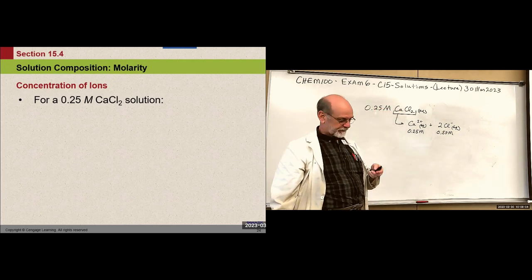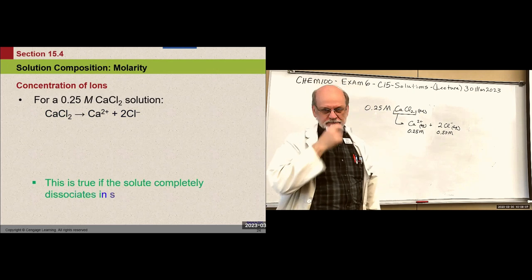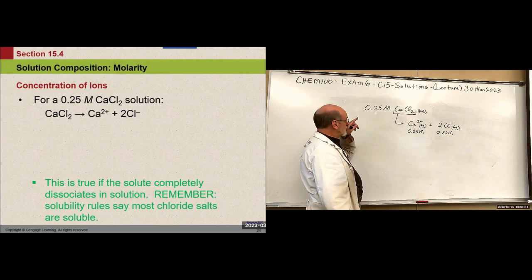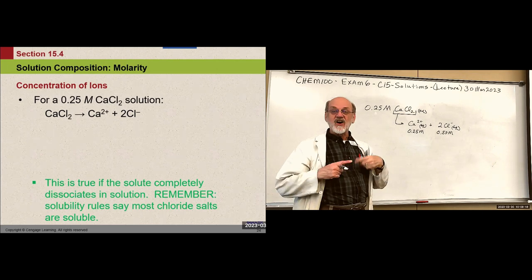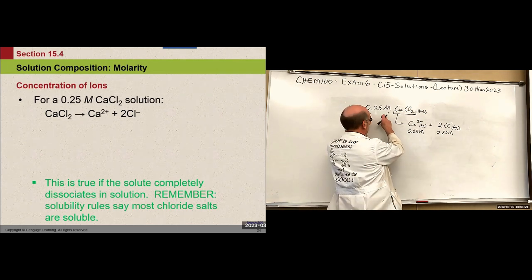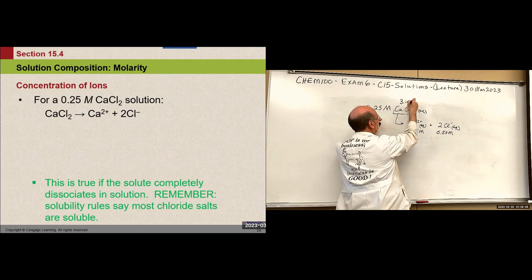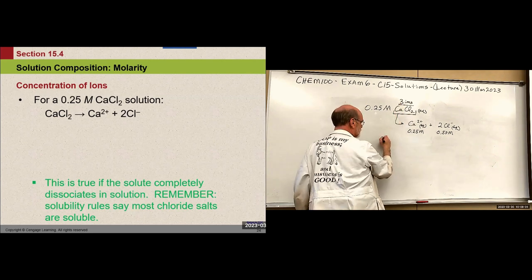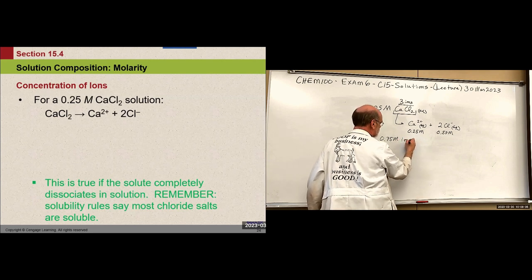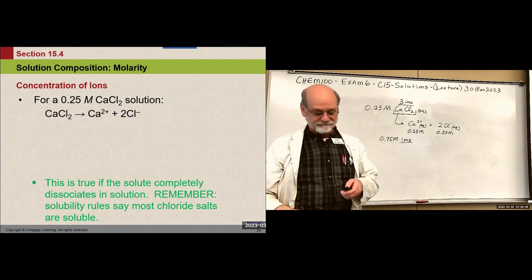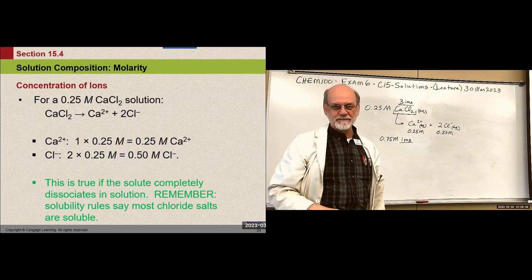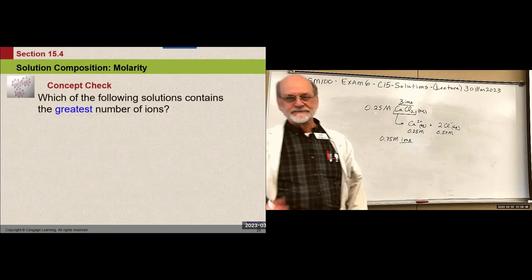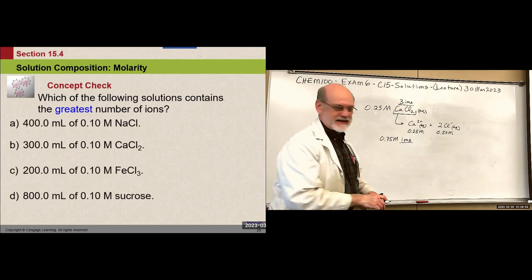So what's the total concentration of ions? If you've got three ions going into solution for every one formula unit, then the total ion concentration is 0.75 molar — three times the original 0.25 molar. Or you can add the individual ion concentrations together — it works both ways.